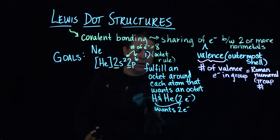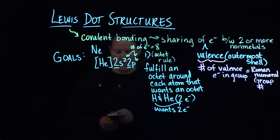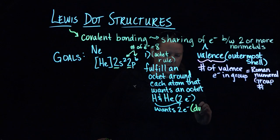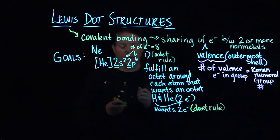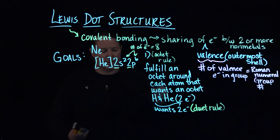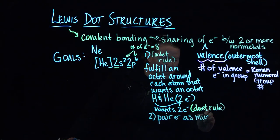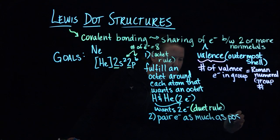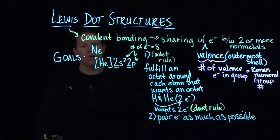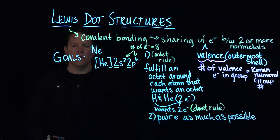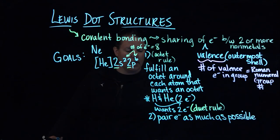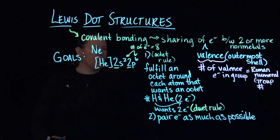We sometimes call this H and He moment the duet rule, so that H doesn't feel all alone out there. And then we have this possibility that we want to pair electrons as much as possible. So those are our goals in the midst of Lewis dot structures: fill an octet around every atom that wants an octet. We already know that H and He comprise exceptions to that rule. They want two, and we want to pair electrons as much as possible.